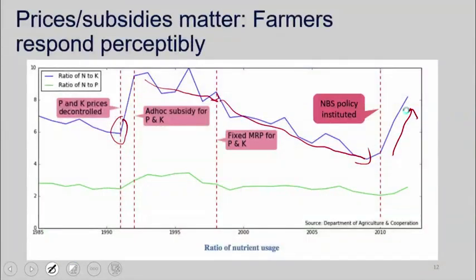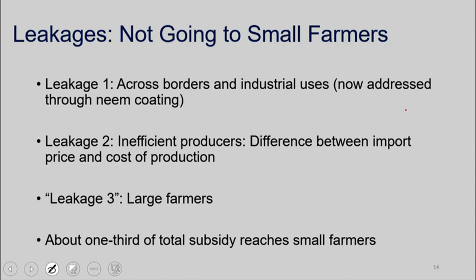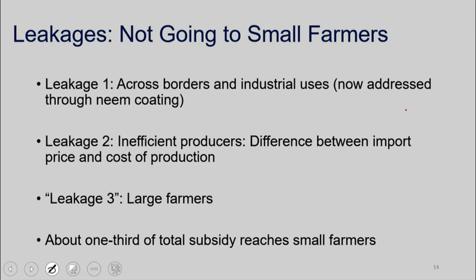So this is the first distortion that comes from this. There are three kinds of leakages of the fertilizer subsidy. By leakage, we mean that whatever is not going to the deserving small farmer is one definition of leakage. In the case of Urea especially, you violate the law of one product, one price. You don't have one product, one price — because you get the subsidy only for agricultural uses, and also in India there's one price and in neighboring countries there's another price. When you violate the law of one product, one price, you will have scope for leakage immediately.